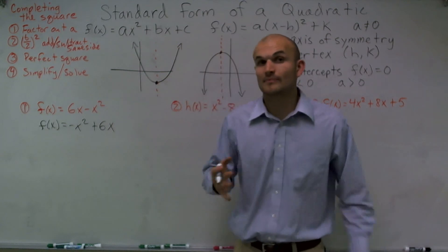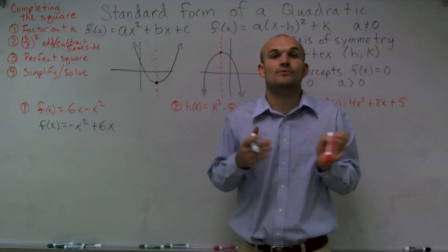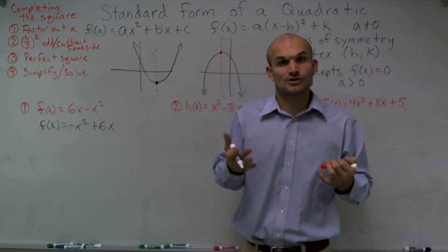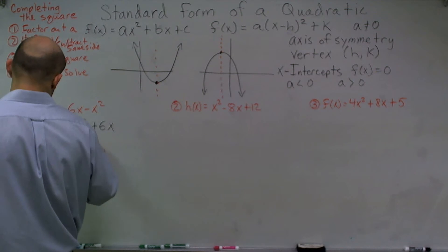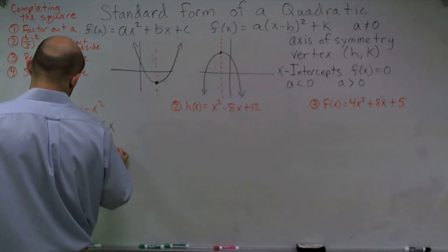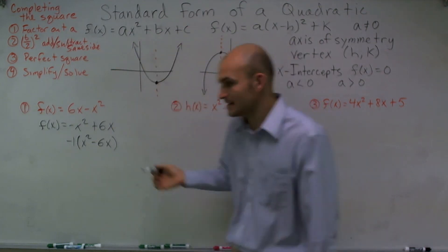OK, now for this problem, remember, I said if you ever see a negative 1, we've got to make sure we factor it out. Whenever our a is negative or it's larger than 1, we have to factor it out. So I'm going to factor out a negative 1. So now, that equals f(x).